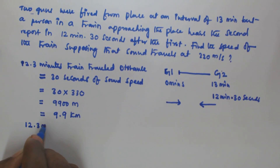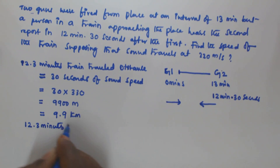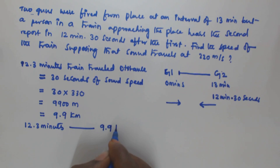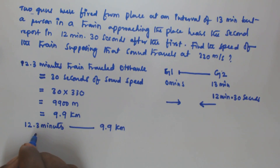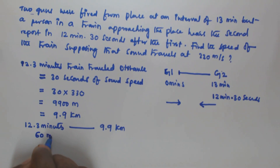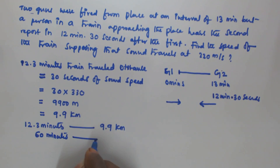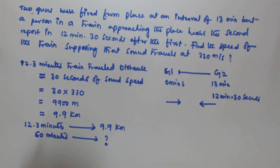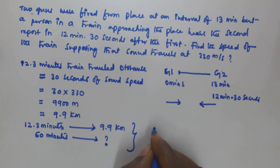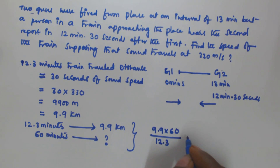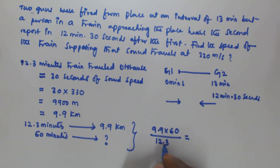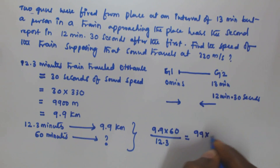The train traveled 9.9 kilometers in 12.5 minutes. We usually calculate speed in km/h, that is kilometers per hour. So we need to find how much distance the train travels in 60 minutes. To get the speed, we multiply 9.9 by 60 and divide by 12.5. Removing the decimal, this becomes 99 into 60 divided by 123, which gives approximately 48 kilometers per hour.